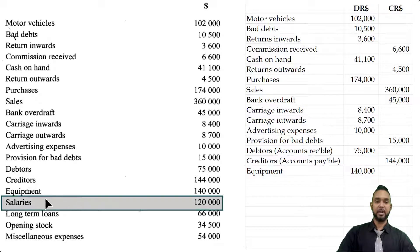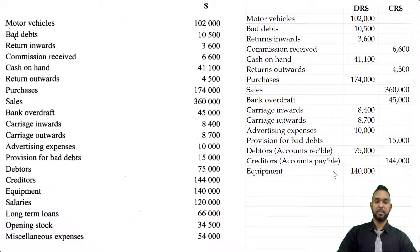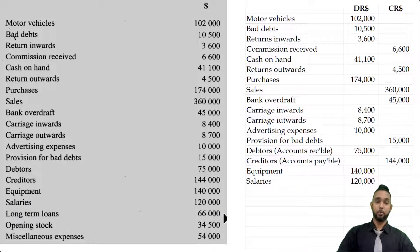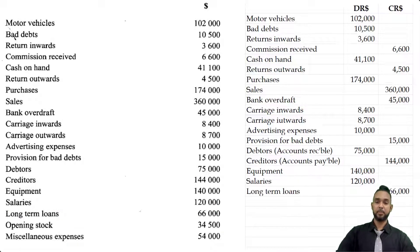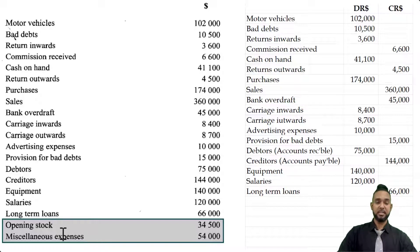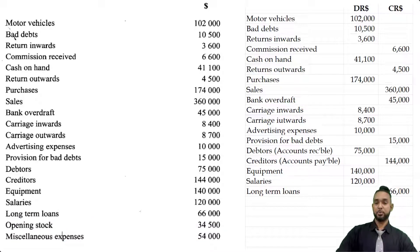Salaries is an expense and expenses have debit balances. Long-term loans is a liability — any type of loan is a liability. Opening stock is an asset with a debit balance, and miscellaneous expenses is an expense which will also have a debit balance.